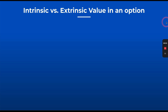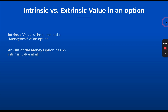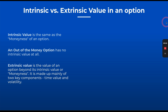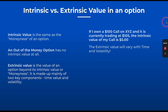As we launch into this discussion, it's going to be very important to have a good understanding of two terms: intrinsic and extrinsic value as they relate to options. The intrinsic value is the same as the moneyness of an option — you'll hear people refer to an option as in the money, out of the money, or at the money. An out of the money option has no intrinsic value at all. Extrinsic value is the value of an option beyond its intrinsic value, made up mainly of two key components: time value (theta decay) and volatility.